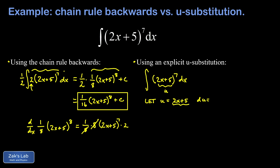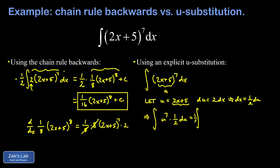Then we transform the differential: du is going to be the derivative of this expression times dx, which is 2 dx. I'll solve for dx, so dx equals one half du. We then transform our integral in terms of u: 2x plus 5 to the 7th becomes u to the 7th, and dx becomes one half du. Moving the one half out in front gives us one half times u to the 7th du. That integrates to one eighth u to the 8th plus C. Replacing u with its definition in terms of x, we end up with one sixteenth times the quantity 2x plus 5 to the 8th plus C — the same answer.